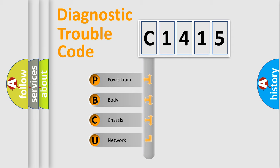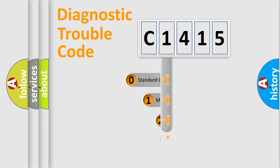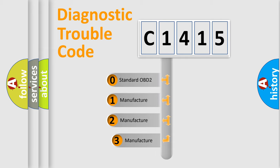We divide the electric system of automobile into four basic units: Powertrain, Body, Chassis, and Network. This distribution is defined in the first character code.